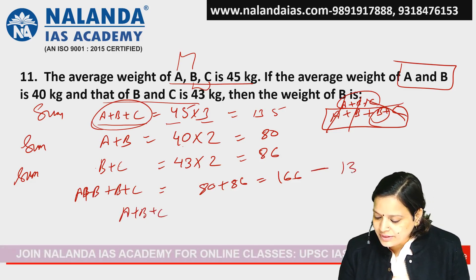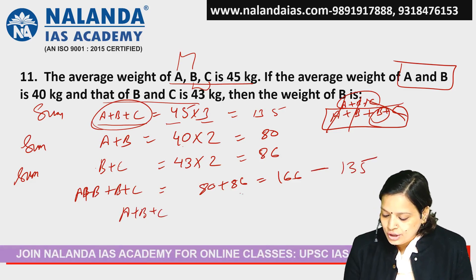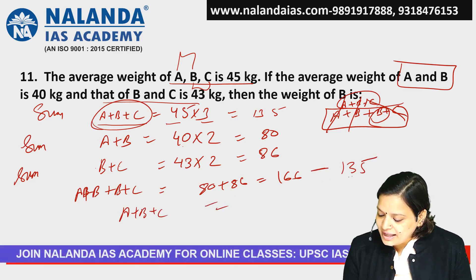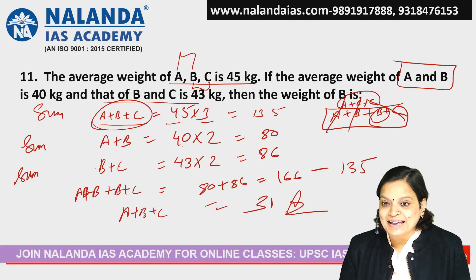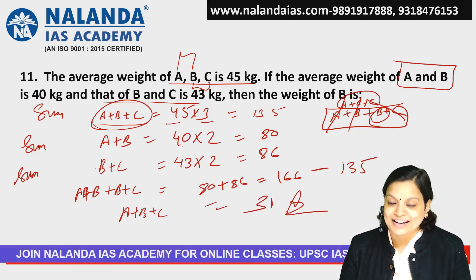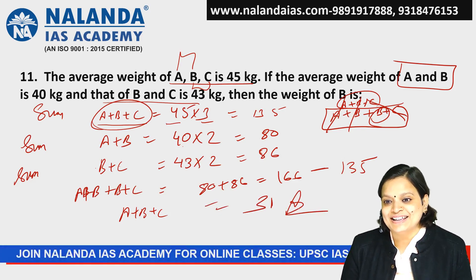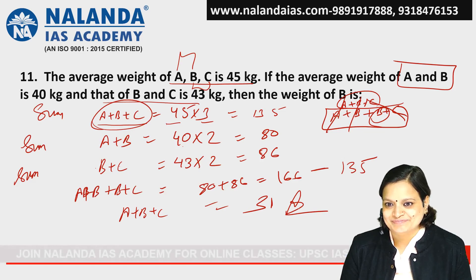So A plus B plus C is 135. Therefore, B equals 166 minus 135, and the answer is 31. The weight of B is 31.